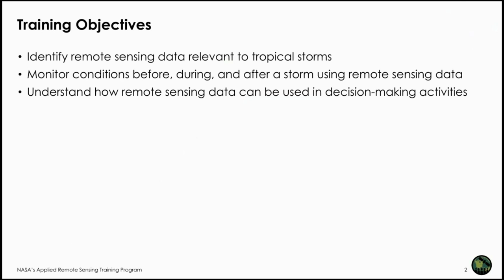The training objectives of this webinar are to identify the NASA remote sensing or model data relevant to tropical storms, be able to monitor conditions before, during, and after a storm, and understand how remote sensing data can be used in decision-making activities. We will discuss the remote sensing datasets available for tracking these events, their characteristics, and how to access and interpret them.